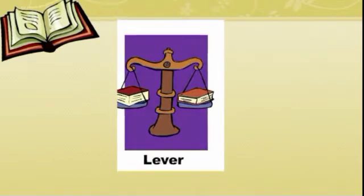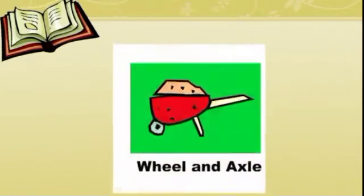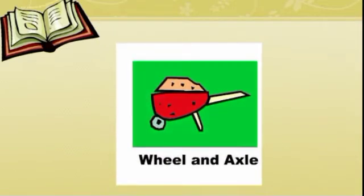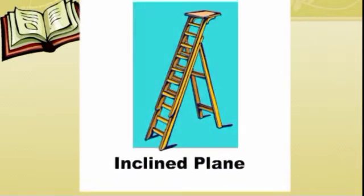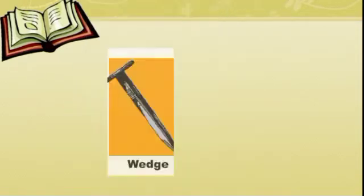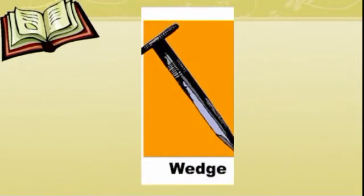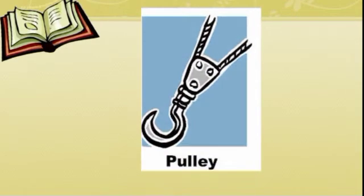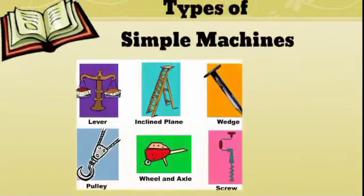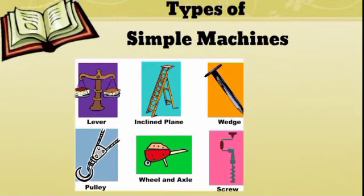Let us discuss the different types of simple machines. We have the lever, the wheel and axle, inclined plane, wedge, screw, and pulley. These machines have a variety of functions, but the common thing about them is they make our tasks easier.